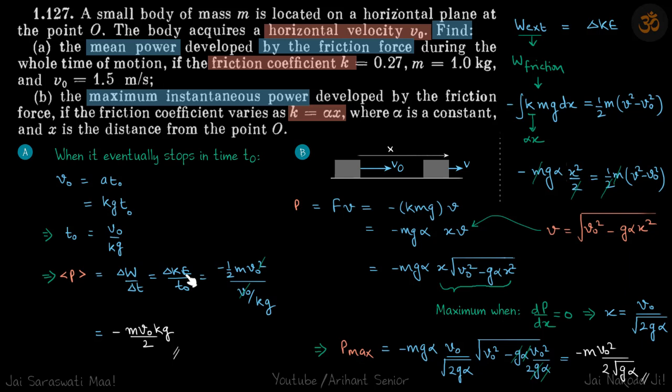Average power is total work done divided by Δt, which equals change in kinetic energy upon t₀. ΔKE is minus half mv₀² because initially it was half mv₀² and finally it was zero. Dividing by total time it took to stop gives our answer.